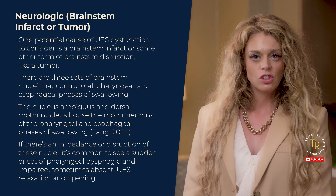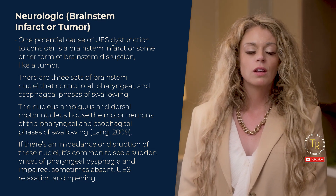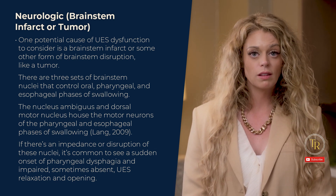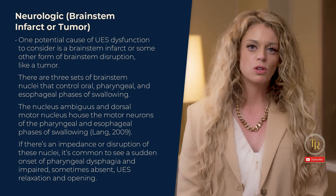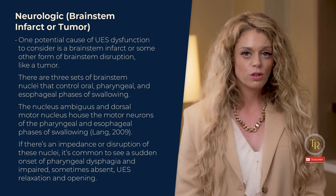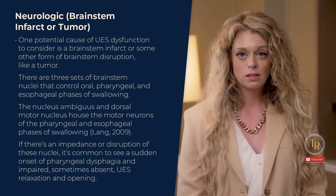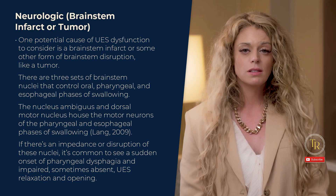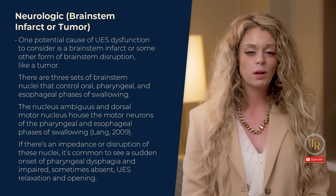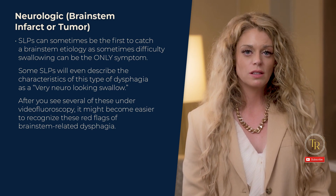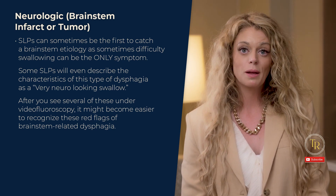One potential cause of UES dysfunction is a brainstem infarct or other brainstem disruption, like a tumor. There are three sets of brainstem nuclei that control the oral, pharyngeal, and esophageal phases of swallowing. The nucleus ambiguus and dorsal motor nucleus house the motor neurons of the pharyngeal and esophageal phases of swallowing (Lange, 2009). If there's disruption of these nuclei, it's common to see sudden onset pharyngeal dysphagia and impaired — sometimes absent — UES relaxation and opening. SLPs can sometimes be the first to catch a brainstem etiology, as difficulty swallowing can be the only symptom.